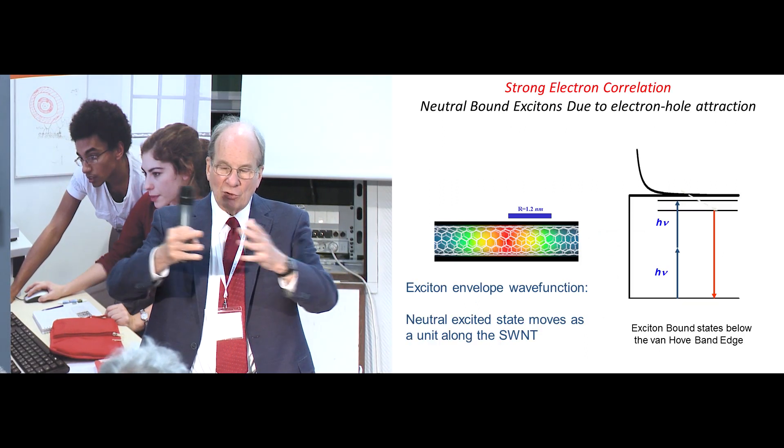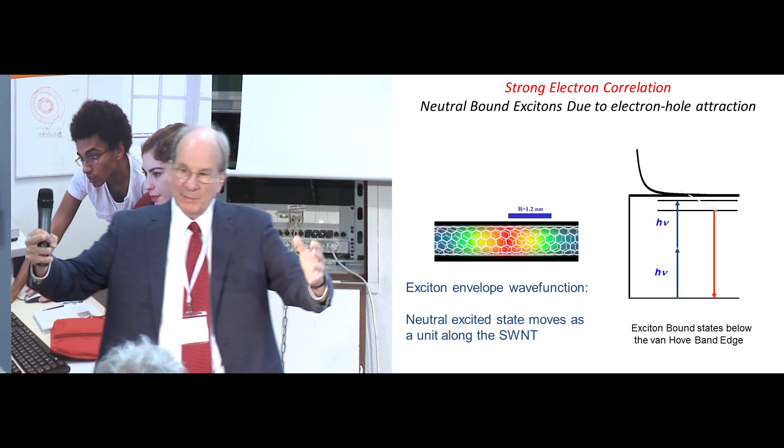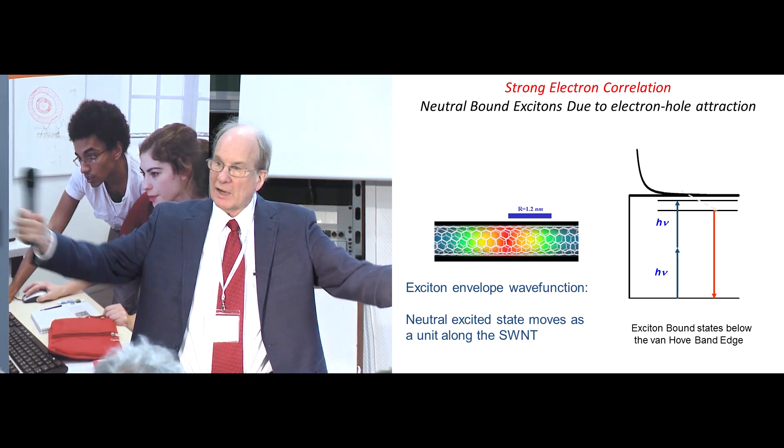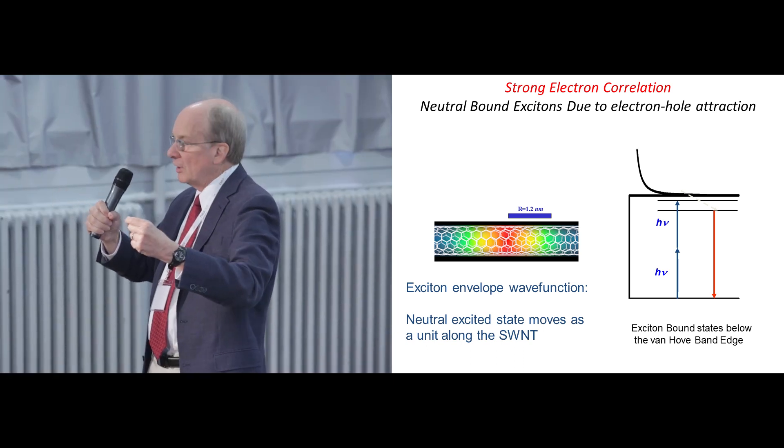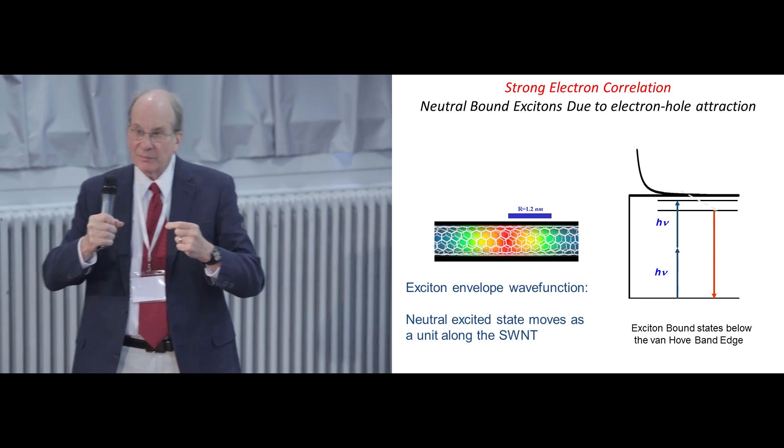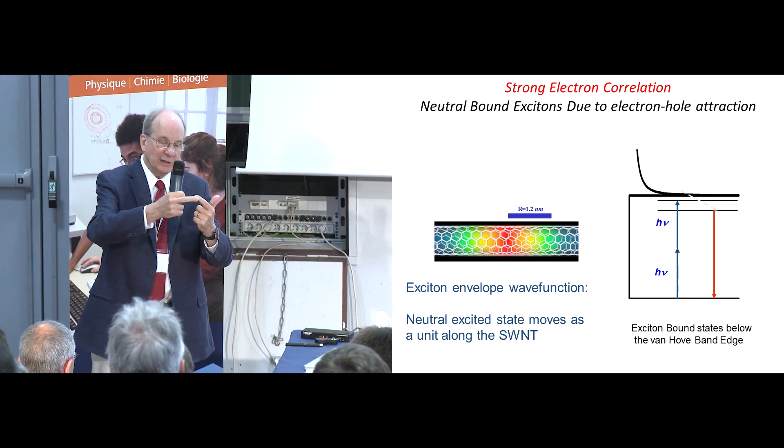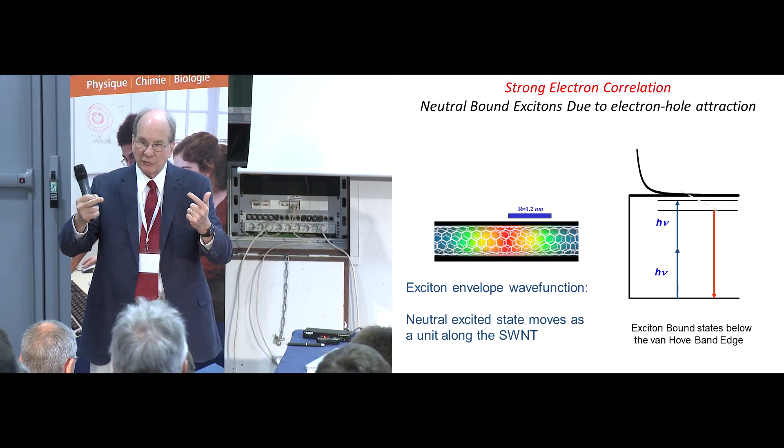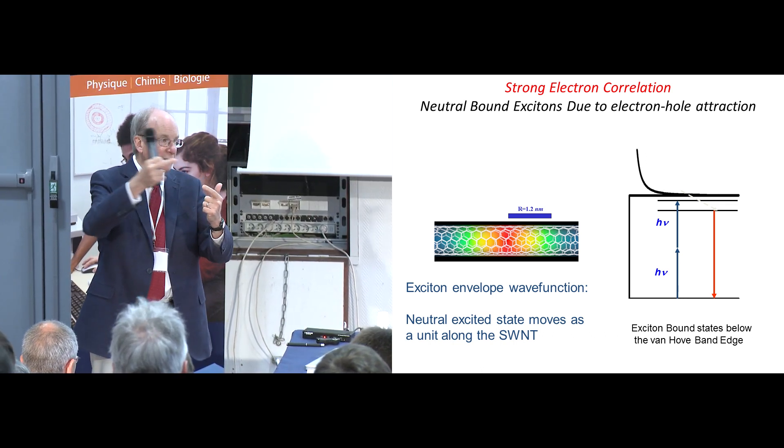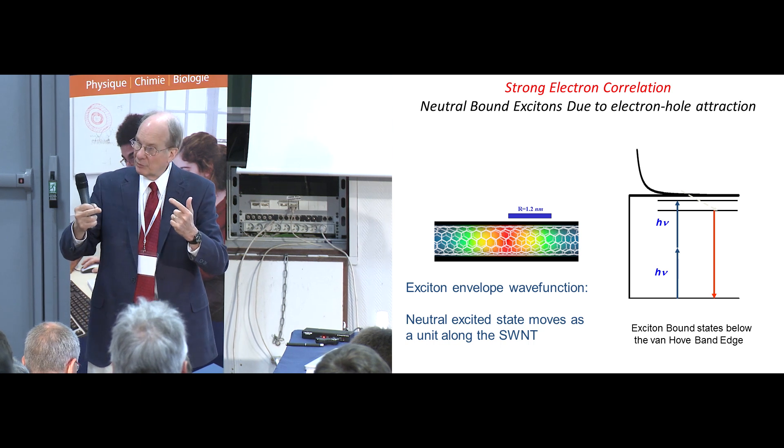Without correlation, if the electron and the hole are eigenfunctions of the momentum, they're delocalized along the entire length of the carbon nanotube. But physically, one attracts the other, and the Coulomb attraction is actually fairly strong because the electric field begins on one carrier and terminates on the other carrier. Part of it fringes out of the carbon nanotube into the vacuum where there's no screening.